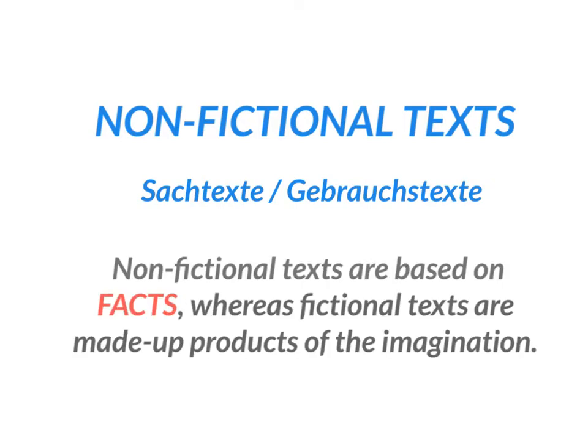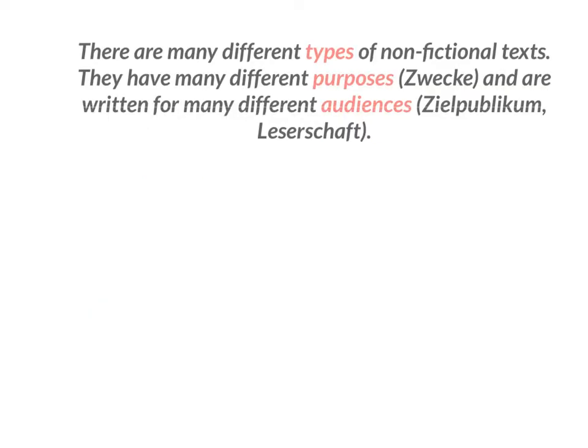Non-fictional texts are based on facts, whereas fictional texts like novels or short stories are products of the imagination — they are made up. They may refer to reality, to the world of facts, but basically they are made-up products of the imagination. There are very many different types of non-fictional texts. Those non-fictional texts may have different purposes and they are targeted at many different audiences.